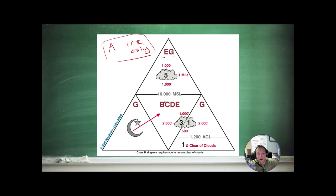Let's start with Alpha. Alpha is outside of here because Alpha is IFR only. So you don't even need to worry about Alpha airspace. At the top here, you've got Echo and Golf above 10,000 feet MSL. Five miles visibility, 1,000 above, 1,000 below, one mile horizontal separation from clouds. The center triangle is Bravo, Charlie, Delta, or Echo. You need three miles visibility.